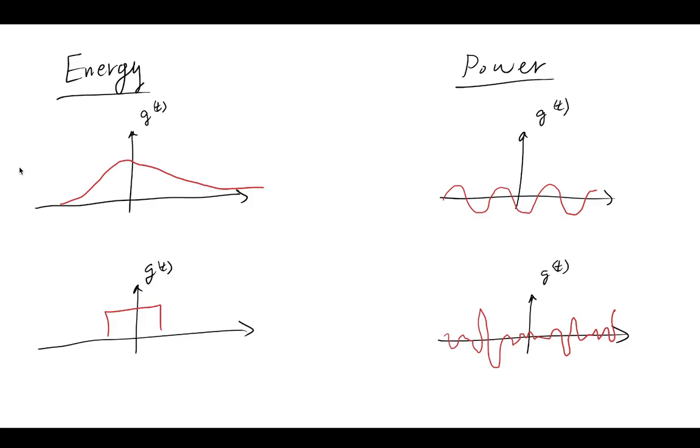As a quick refresher, energy signals are signals in which you can define an integral from minus infinity to infinity where that function squared is equal to a finite number. Energy signals typically approach zero or are equal to zero for some very large period of time. For example, this one is equal to zero from here all the way to infinity, so for an infinite amount of time in these directions it's equal to zero. This signal just approaches zero. Either way, when you take this integral, you will get a finite number.